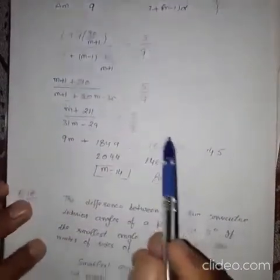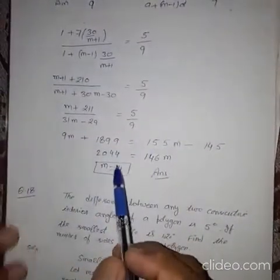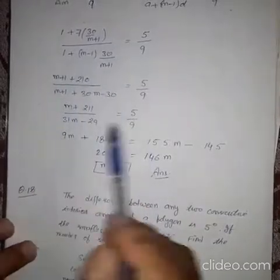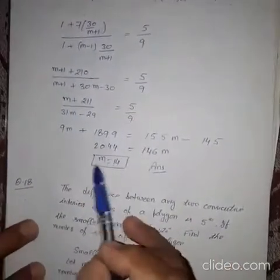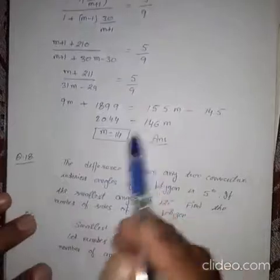Now you cross multiply. You take LCM and cross multiply. And we will have the value of M as 14. You do the calculations. And value of M will be 14. This is the answer. I hope it is clear.